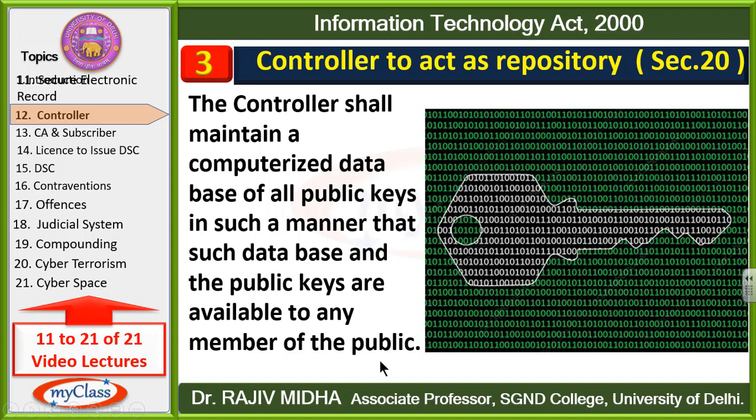B point: Controller apne database ke andar woh saari public keys ko rakhega jo public keys kisi bhi time par public ke kisi bhi member ko chahiye hongi. Students yahan par note karein ki public key simply ek number hai in binary form — ek bahut lamba binary form ke andar number hai.